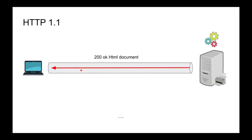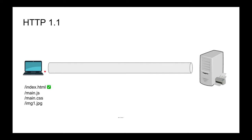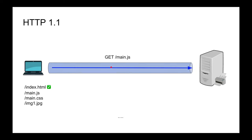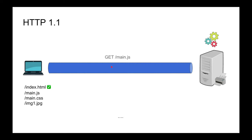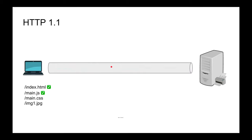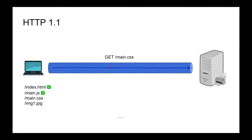You make a request, wait, and get back the document — whether it's a file on the back end or a REST request returning a JSON document. What happens if you need to send multiple requests? Say you parsed index.html and found you need main.js, CSS, and a JPG — you request main.js, wait for it, then request the next file, and so on. Obviously, it is slow.